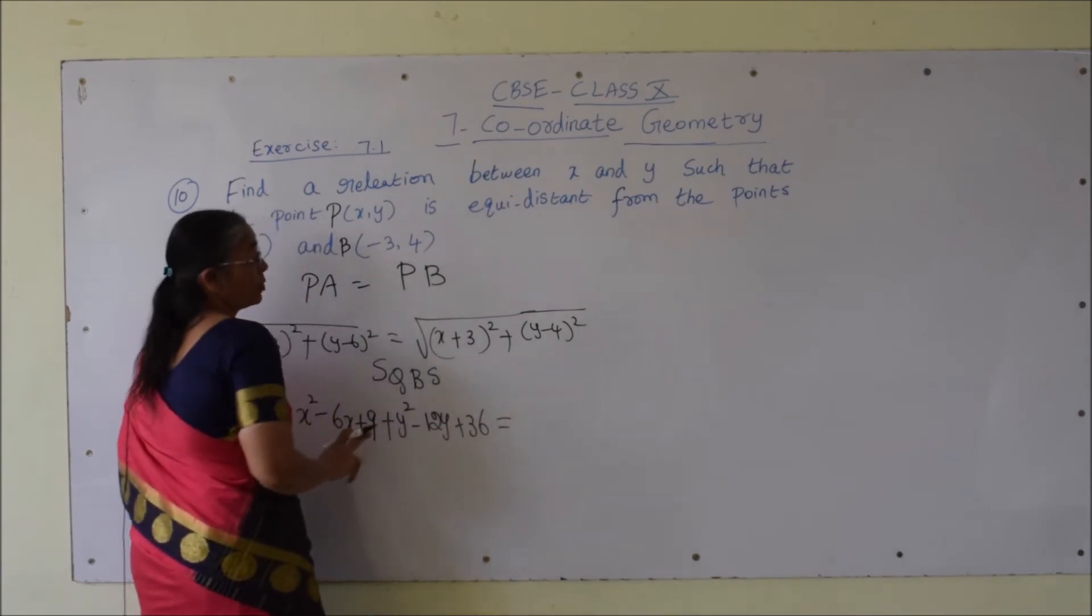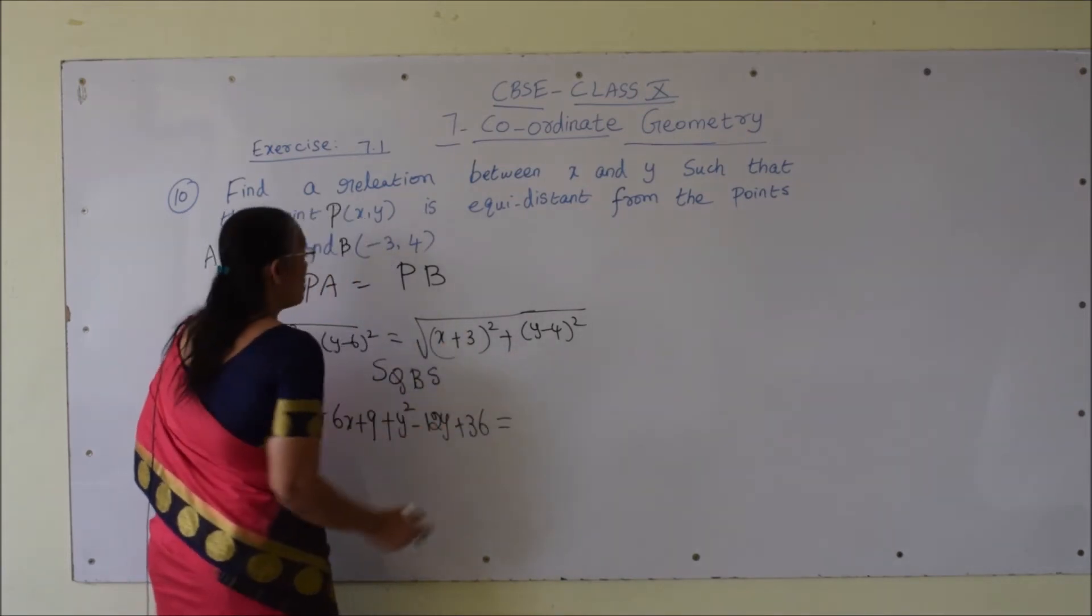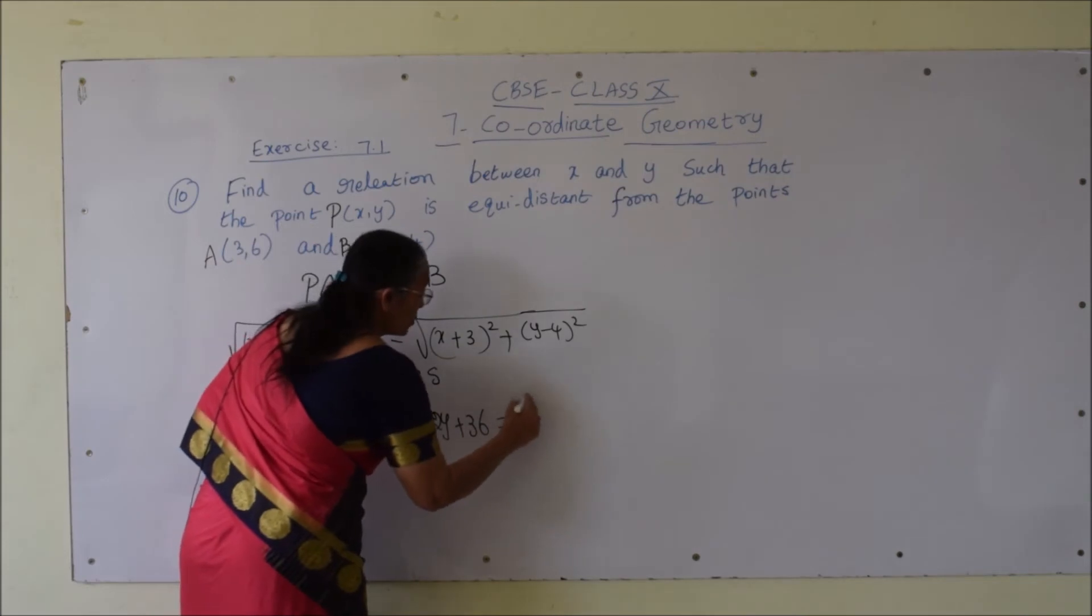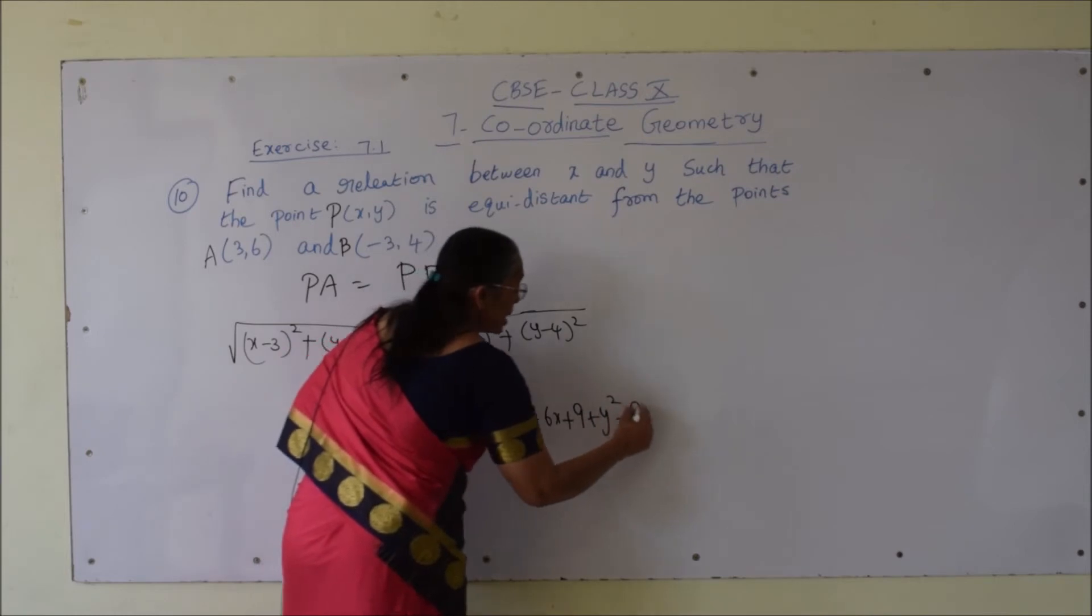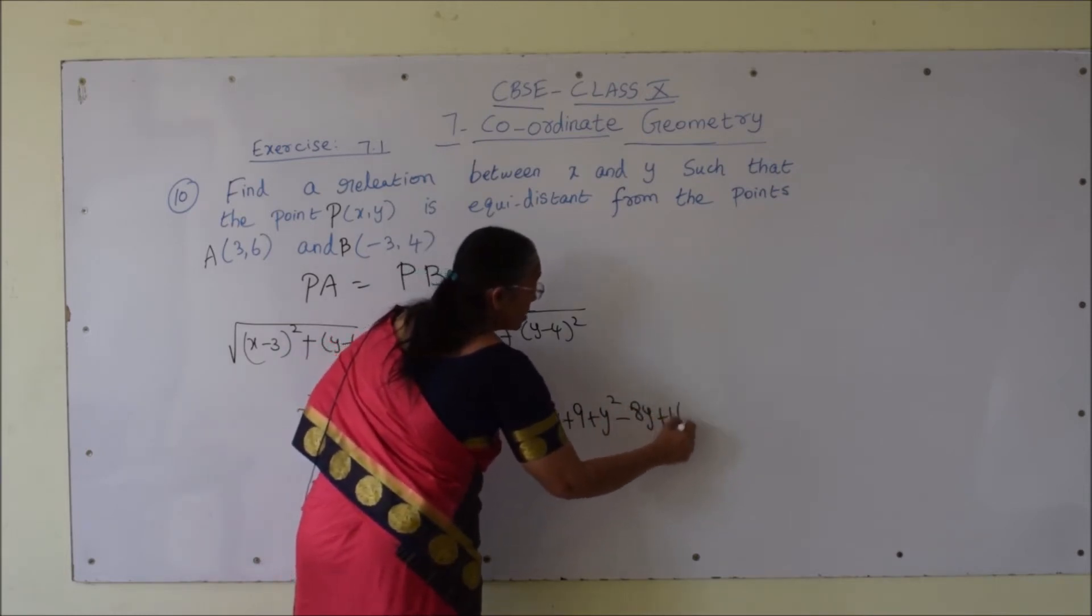square root gone, since we are doing squaring on both sides. (a plus b) whole square and again (a minus b) whole square. So x square plus 6x plus 9 plus y square minus 8y plus 16.